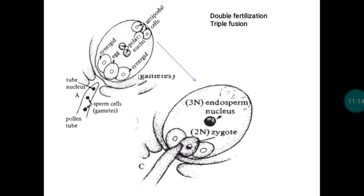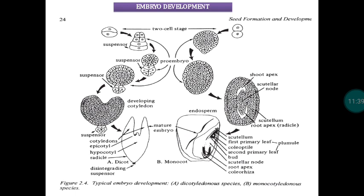Immediately after fertilization, the tissues of the zygote and the endosperm enter into mitosis — cell multiplication — coupled with organogenesis, where tissues are modified into various essential parts of the seed system. Here you can see the process of embryo development in the case of monocot and dicot. The right-hand side information relates to embryo development in monocot, while the left-hand side relates to embryo development in dicot.